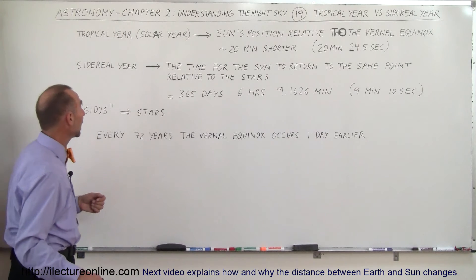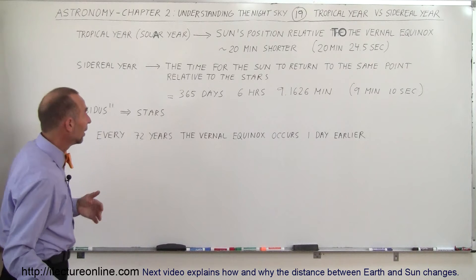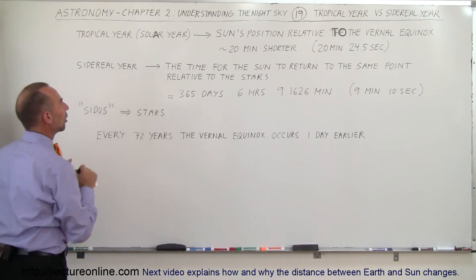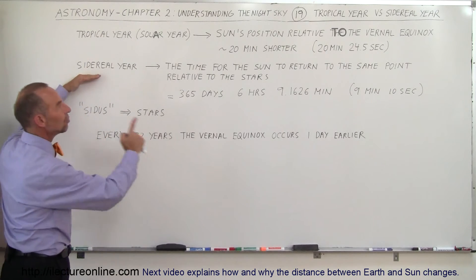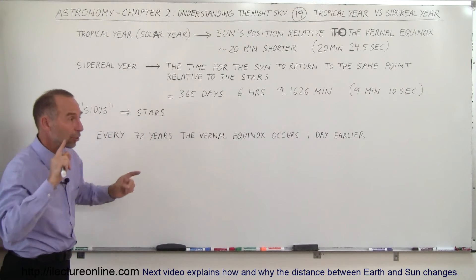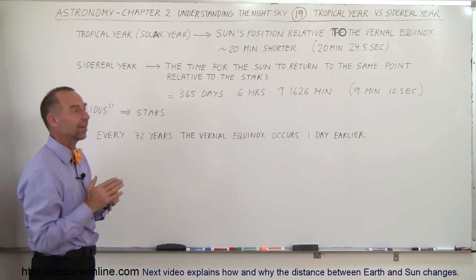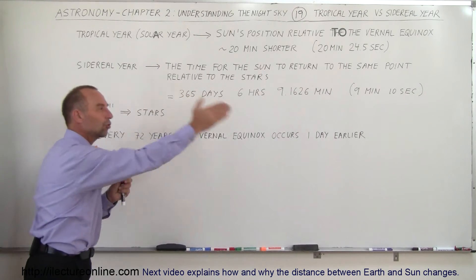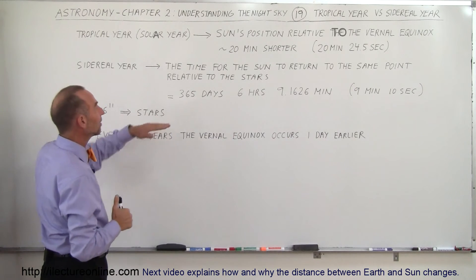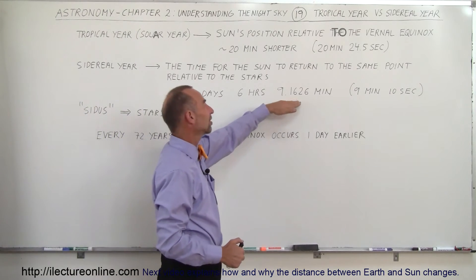Now let's look at what the sidereal year really is. Sidereal comes from the word 'cidus,' which means stars. The sidereal year is the complete rotation of the Earth around the Sun relative to the stars — when the Earth makes one complete orbit such that the line from the Earth to the Sun to the stars is exactly the same again. That takes exactly 365 days, 6 hours, and 9.1626 minutes.